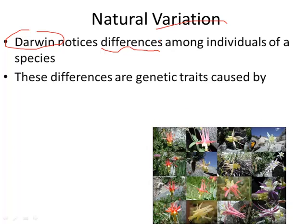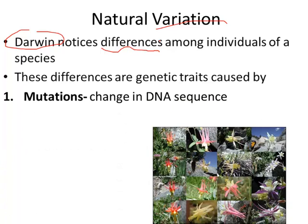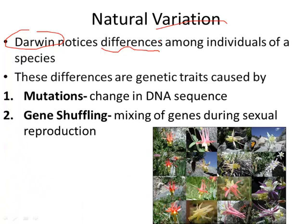These genetic traits and differences can be good or bad. They are caused by either mutations, which change the DNA sequence, or gene shuffling — the random mixing of genes during sexual reproduction, meaning that every sperm and egg is different. So you're going to create a variety of organisms.